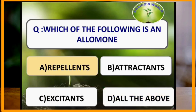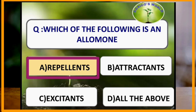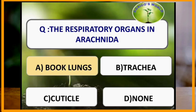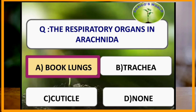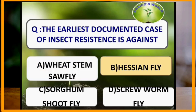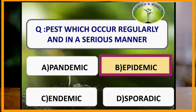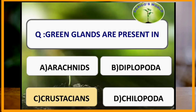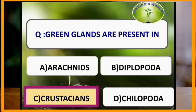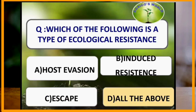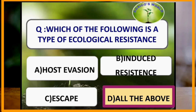Repellents are allomones. The respiratory organs in Arachnida are book lungs. The earliest documented case of insect resistance is against the Hessian fly. Pests that occur regularly and in a serious manner are called epidemic pests. Green glands are present in crustaceans. Types of ecological resistance include host evasion, induced resistance and escape.